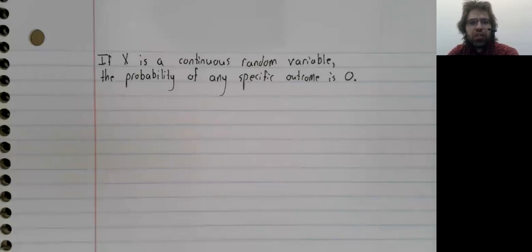because for a continuous random variable, the probability of any specific outcome is zero. That may seem horribly unintuitive,